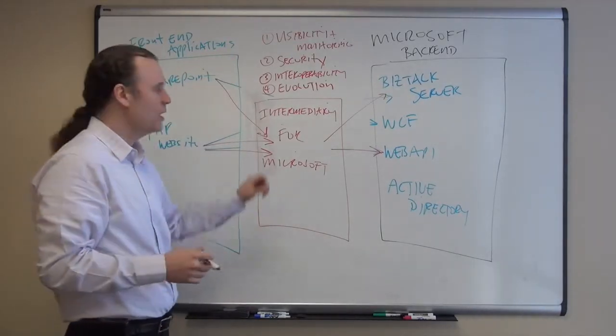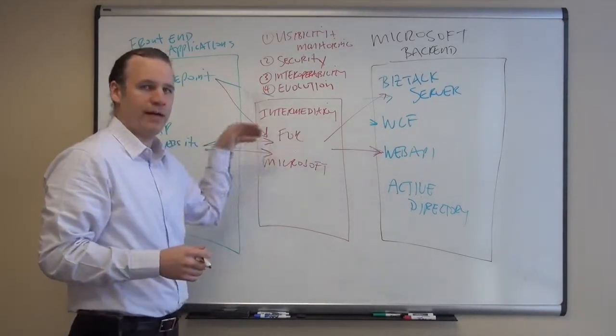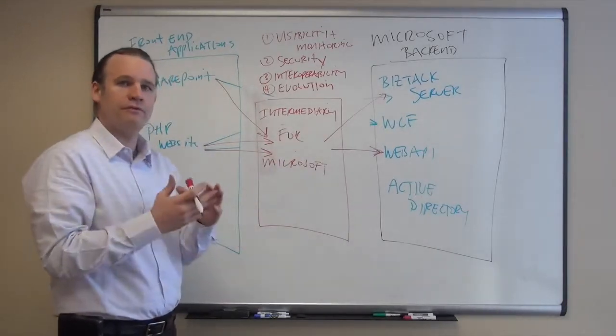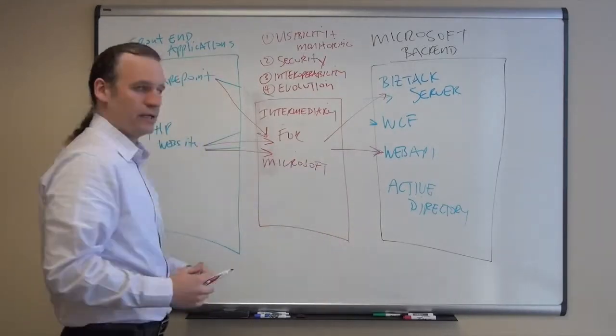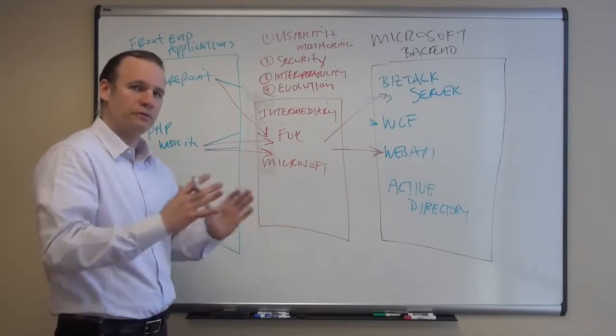The first one is around visibility and monitoring. So with Intermediary for Microsoft we can actually monitor all traffic patterns coming through. And we can also give you things like metrics and we can also give you full visibility through a service catalog in terms of what back end services exist, what front-end consumers exist, who has access rights to call who. So you have full control and full visibility.